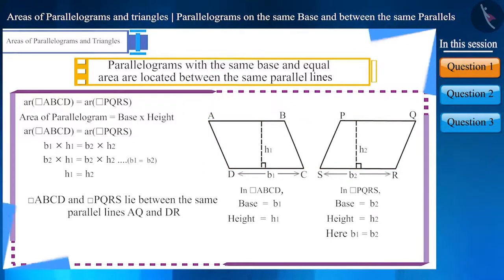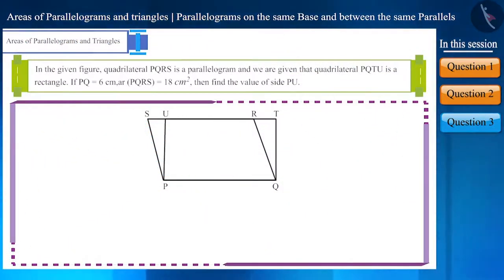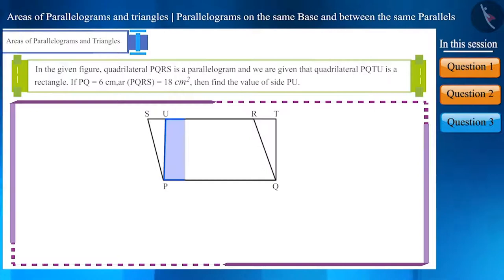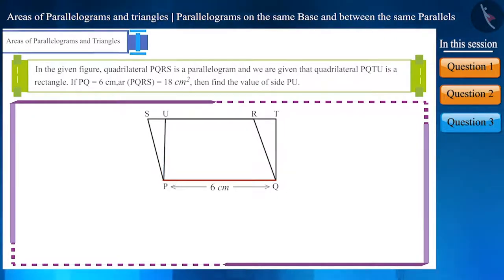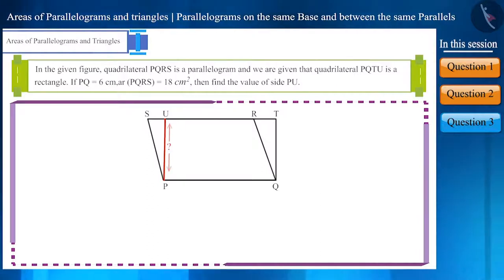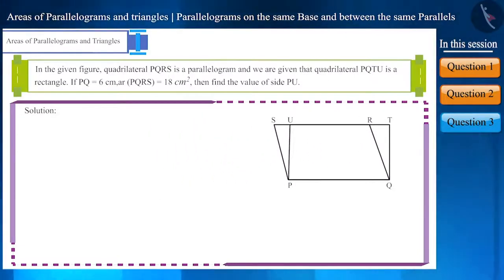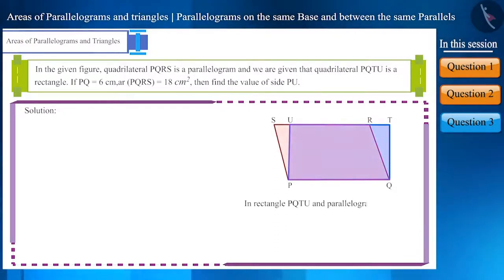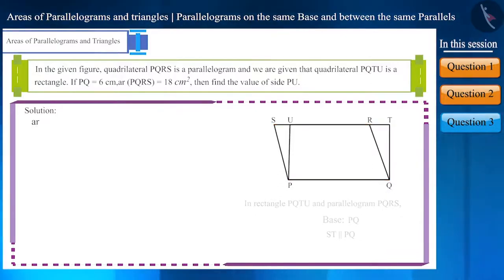Let's move to the second question. In the given figure, quadrilateral PQRS is a parallelogram and quadrilateral PQTU is a rectangle. Rectangle PQTU and parallelogram PQRS lie on the same base and between the same parallel lines. Therefore, their areas will be equal.